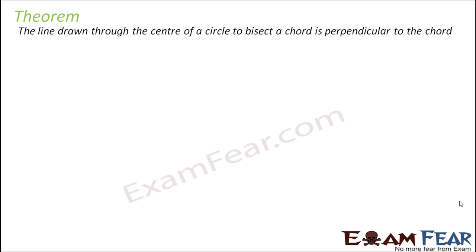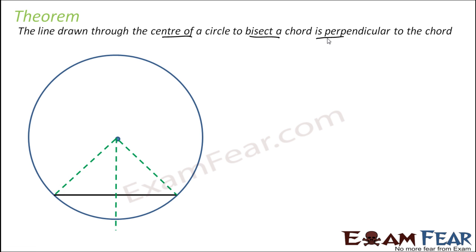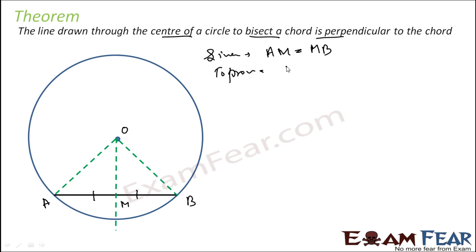Now let us check if the converse is true. The converse states that if a line is drawn through the center of a circle and it bisects the chord, then this line will be perpendicular to the chord. In the same setup, it is given that AM is equal to MB, and we have to prove that angle AMO is equal to 90 degrees.